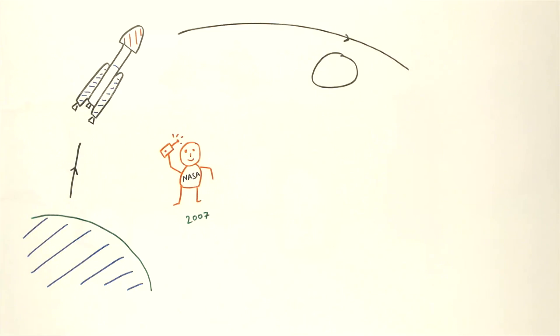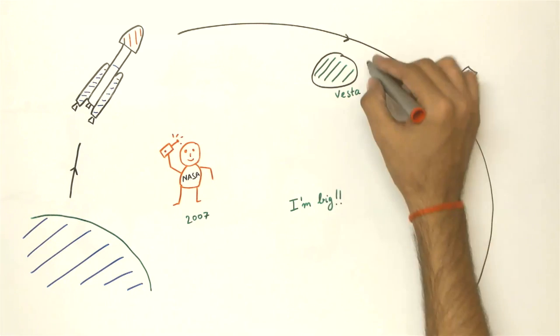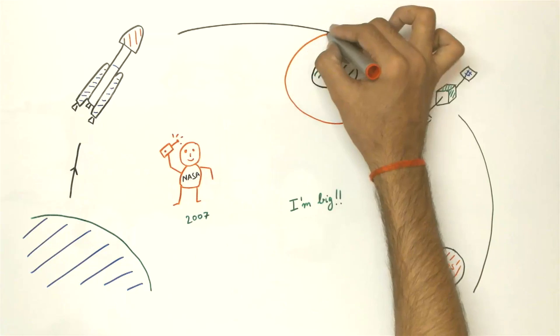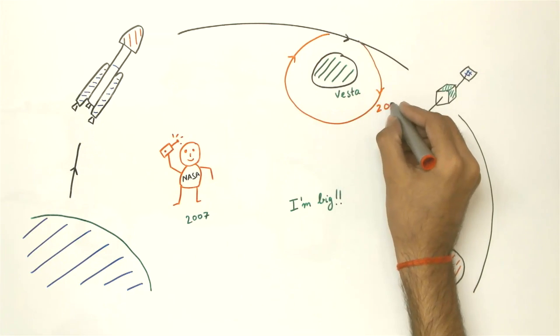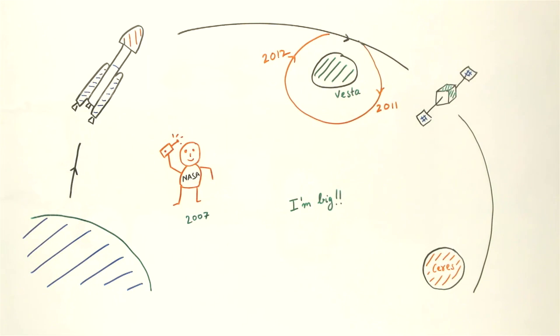Having completed its mission of Vesta, the craft is currently en route to Ceres, which by the way is the largest body in the asteroid belt. Dawn was the first spacecraft to visit Vesta, entering orbit in 2011 and successfully completing its 14-month survey mission of Vesta in late 2012. It was expected to enter Ceres' orbit in Feb 2015.